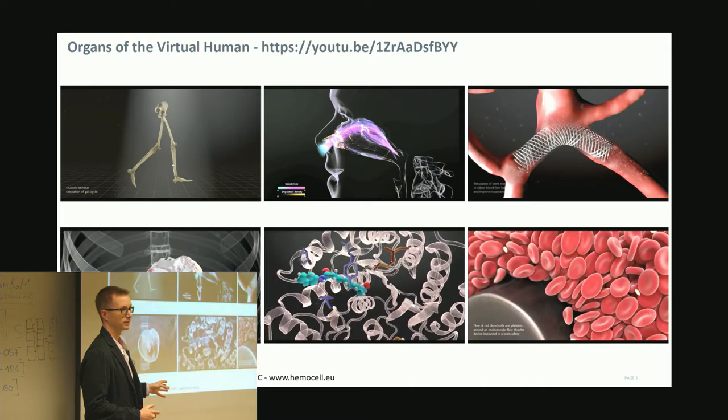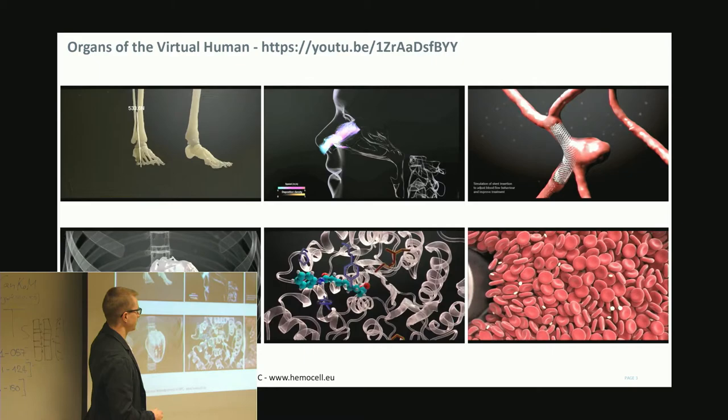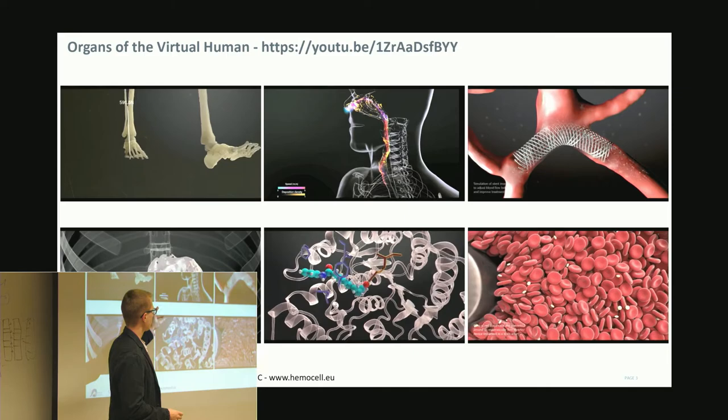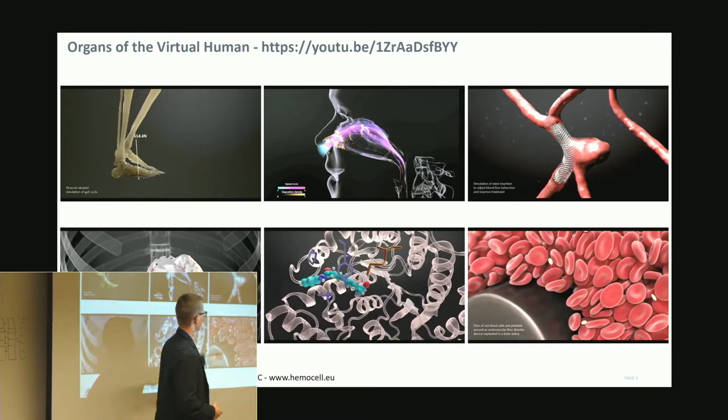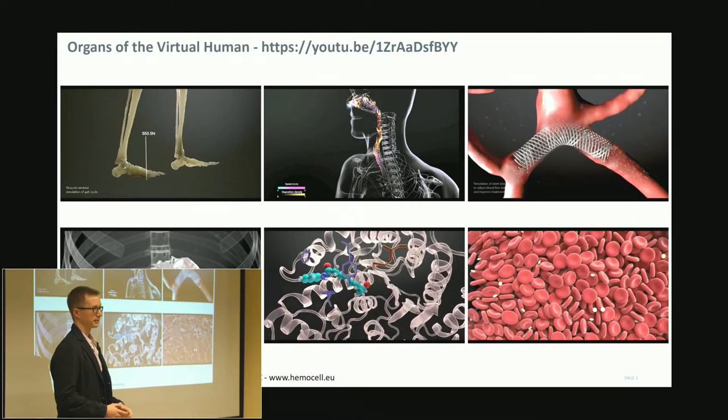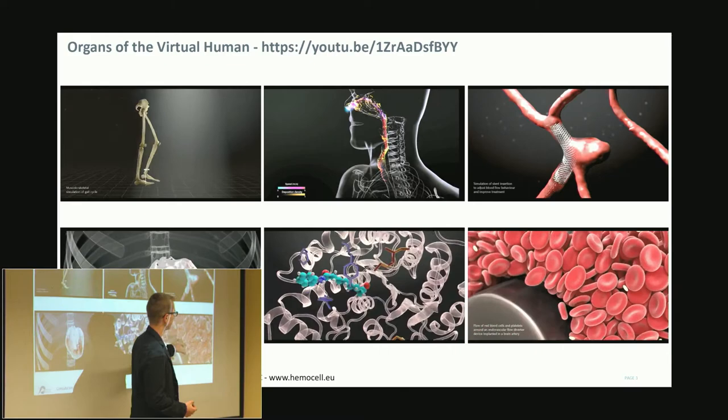I cherry-picked a few examples from the virtual human model. We have very good skeletal models — the guy developing that is here in Barcelona. There are all kinds of simulations about how drug delivery could work in the respiratory system, blood flow related things, and the most mature model is probably the human heart model. There's also some drug binding in cancer research, and the highlight of this talk is the cellular level simulation of blood flows.